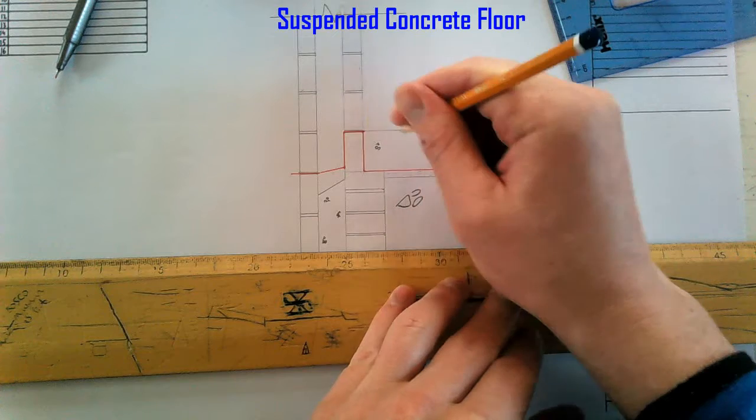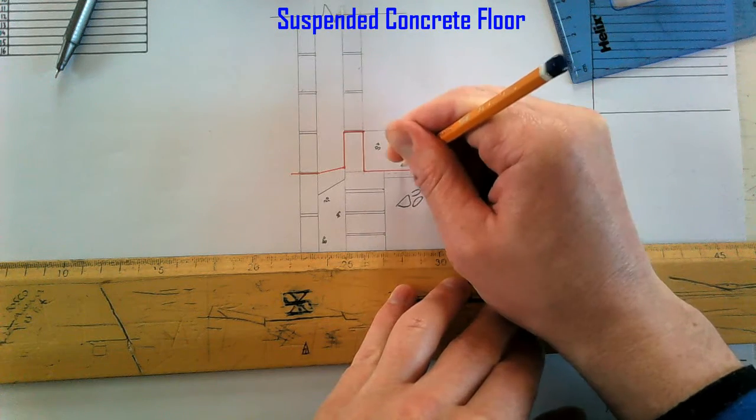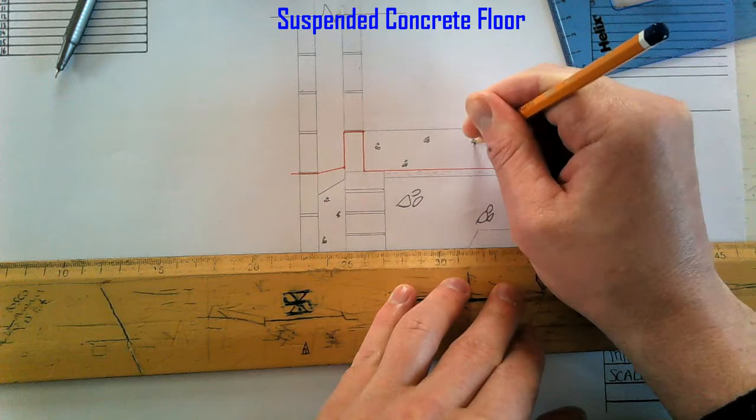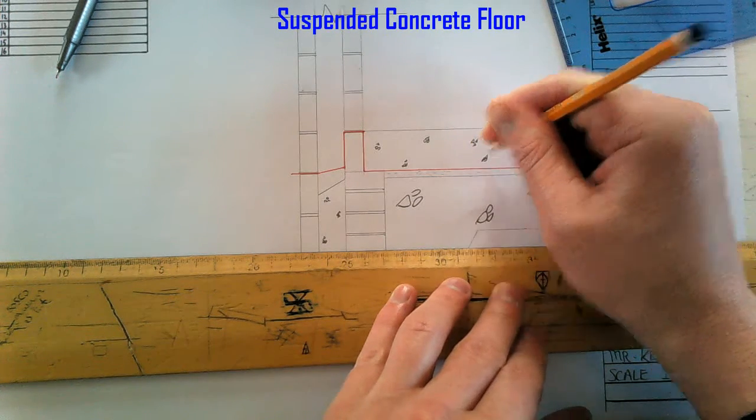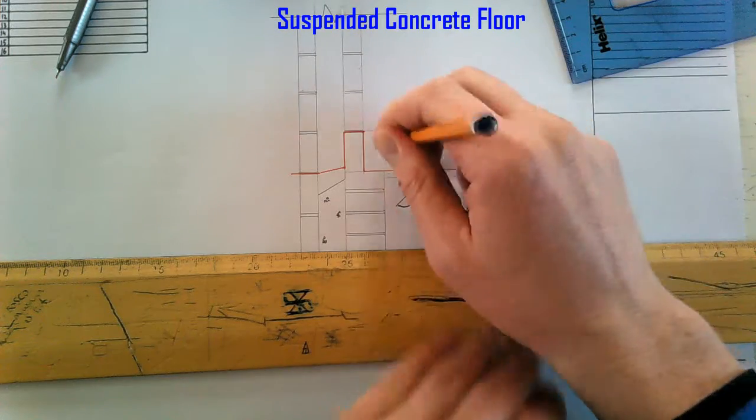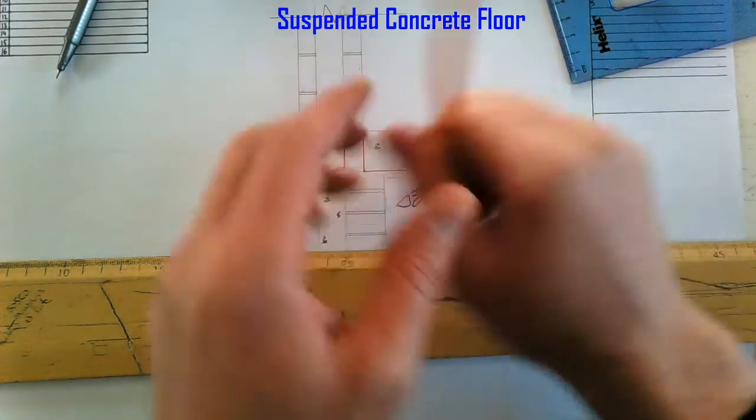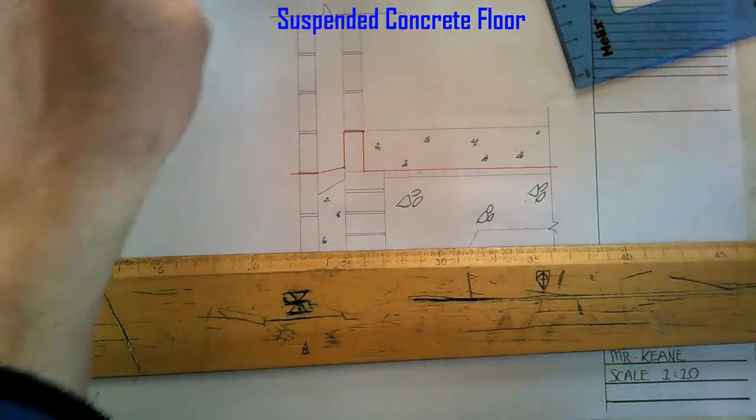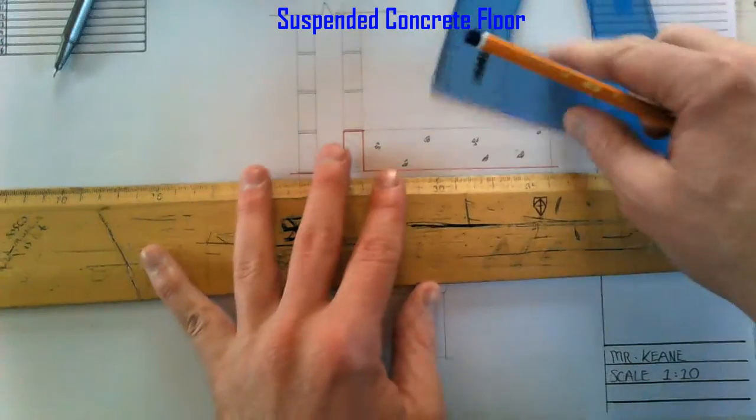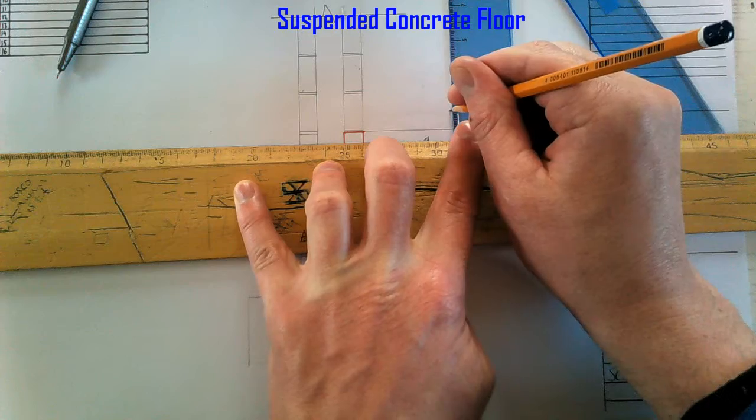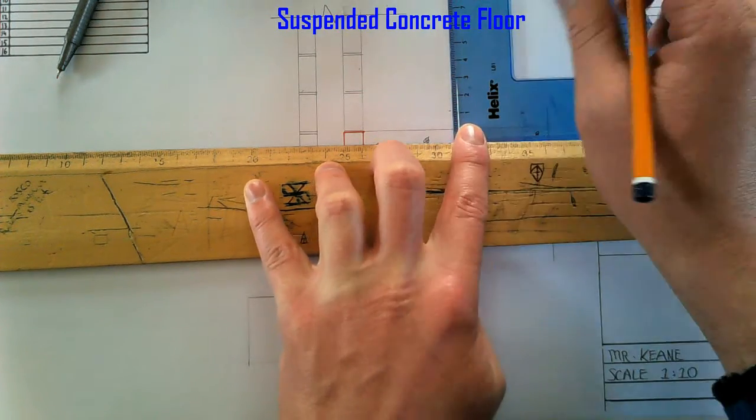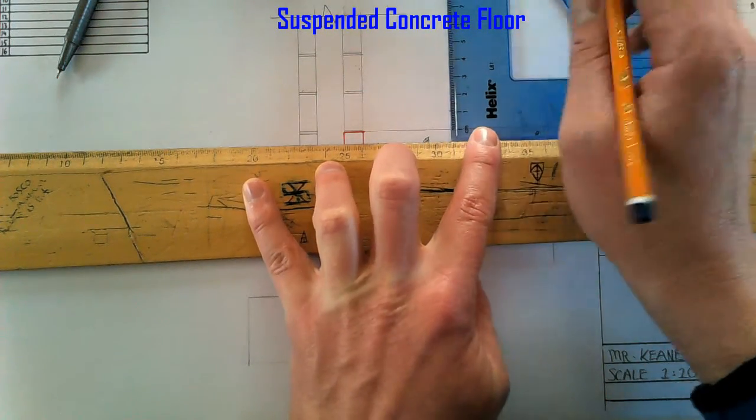Put in my concrete. So sitting on top of the concrete slab then, we have 100mm insulation, and then we're going to have 65mm screed on top of that.